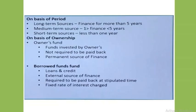Long-term sources include all those sources which are required by a business firm for a period exceeding five years. For example, long-term sources are generally required for purchasing fixed assets. Medium-term sources include all those sources which are required by a business for a period more than one year but less than five years. Short-term sources include all those sources which are required by a business for a period not exceeding one year. For example, trade credit, commercial papers, etc.